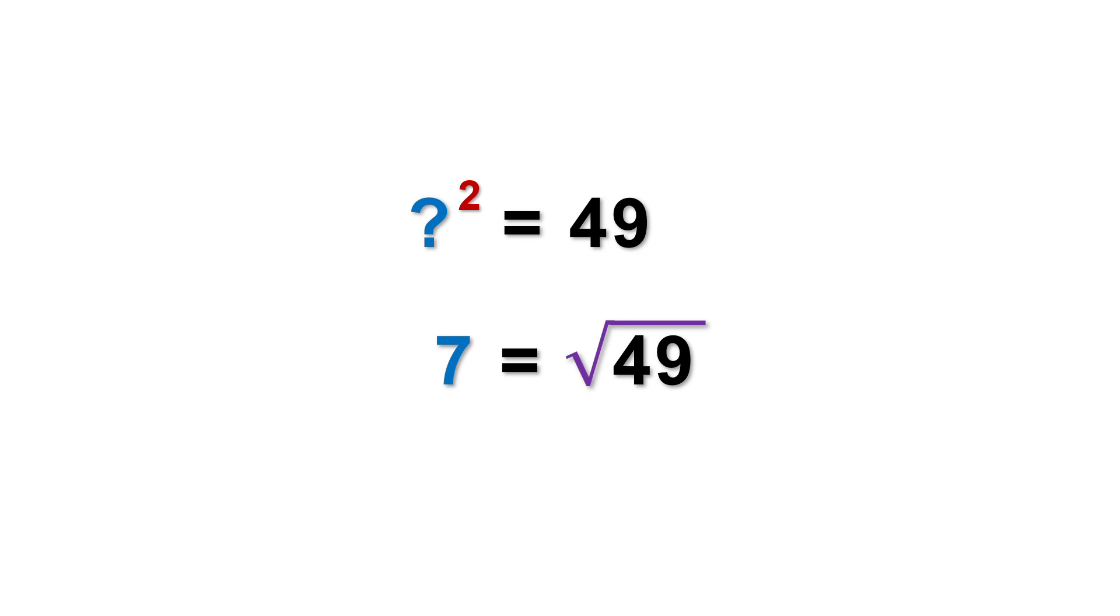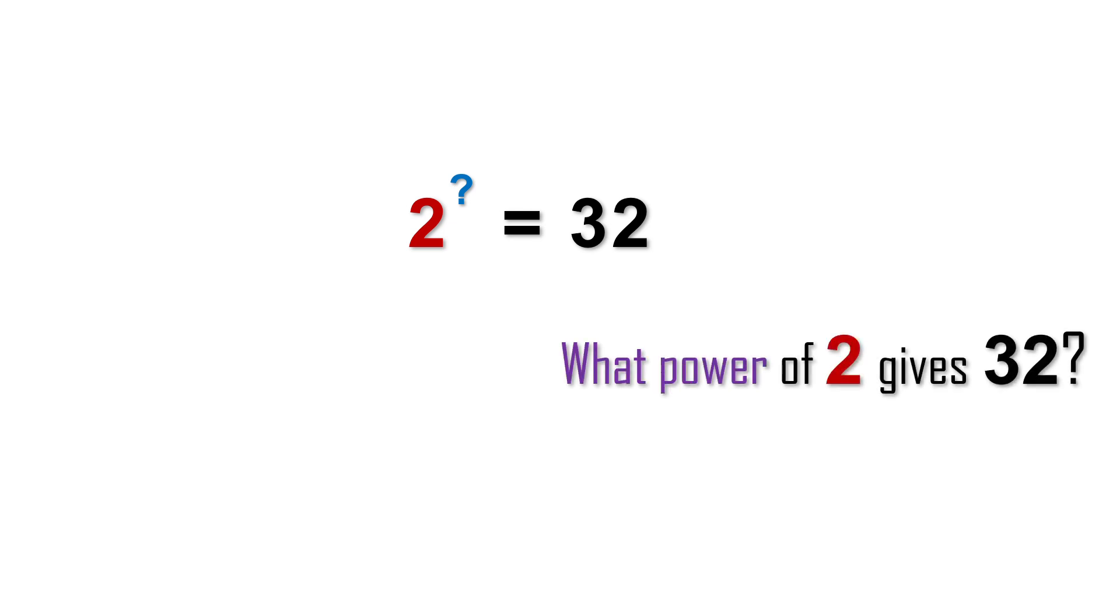Now let's step it up a notch. Imagine you have the number 2 and you raise it to some power and the result is 32. But here's the question, what power did you use? To find the power, we need to do the opposite. In our case we ask, what power of 2 gives 32? The answer is 5, because 2 to the power of 5 is 32.